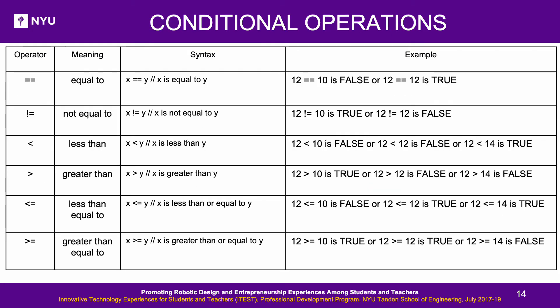Conditional Operations: The following symbols can be used to compare two values and decide the output based on conditions. If the condition is satisfied the result is true, otherwise false. Use double equals (==) to check equality, exclamation-equals (!=) for non-equality, less-than (<) to compare x less than y, greater-than (>) for x greater than y, less-than-or-equal (<=) for x ≤ y, and greater-than-or-equal (>=) for x ≥ y.